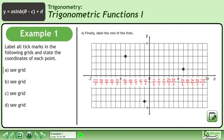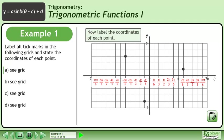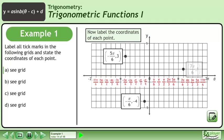Finally, label the rest of the ticks. Now label the coordinates of each point. The first point is located at negative 5pi over 6, 3. The second point is located at negative pi over 6, negative 4. And finally, the third point is located at 7pi over 6, 1.